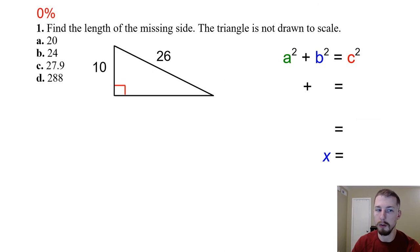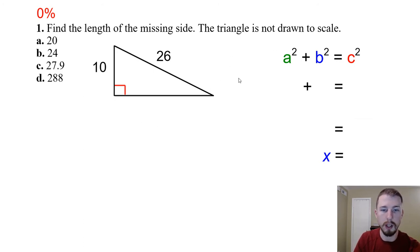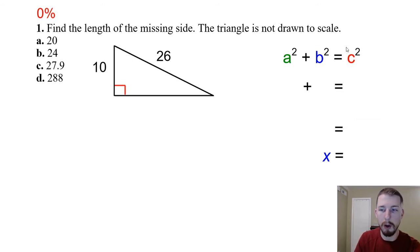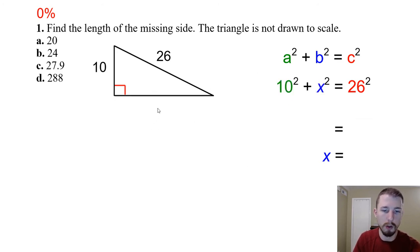Number one — none of my students that took the test missed this one, but let's go through it anyway just in case. Find the length of the missing side; the triangle is not drawn to scale. We do have a right triangle, which means we can use the Pythagorean theorem. We can't use trig because we don't know any of the angles. We've got 10 and 26 — 26 is our hypotenuse. I'll call the missing side x, so: 10² + x² = 26².